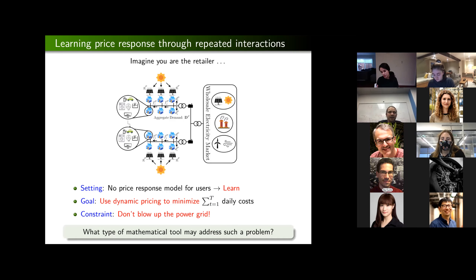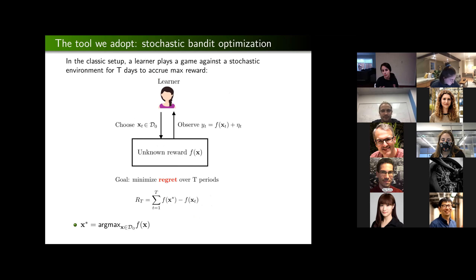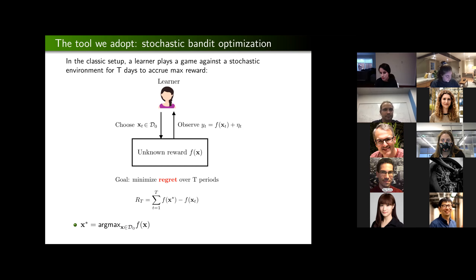If I just apply a general-purpose learning algorithm, I might post prices that get customers to shift all their demand to 6 PM, violating power system constraints — which is not what I want. So the question is: what mathematical tool addresses such a problem? The tool we adopted is stochastic bandit optimization. In stochastic bandit optimization, a learner plays a game against a stochastic environment. The environment has an unknown reward function f(x) that the learner doesn't know.